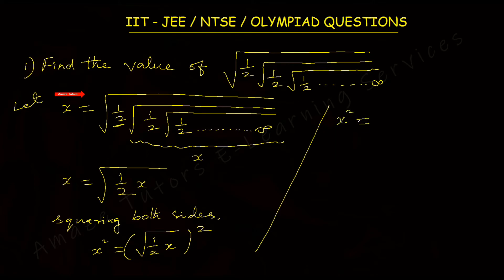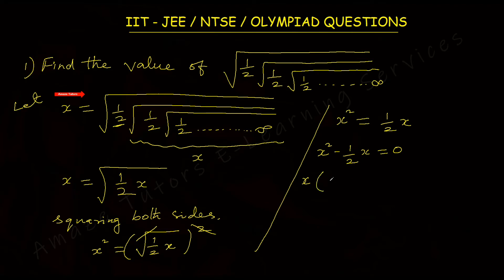We know that square root and square cancel each other, so we have x squared equals 1/2 times x. Taking this to the left side: x squared minus 1/2 x equals 0. This is a quadratic equation. Solving it using the factoring method — take the highest common factor, which is x, outside, and the remaining term is x minus 1/2, equals 0.